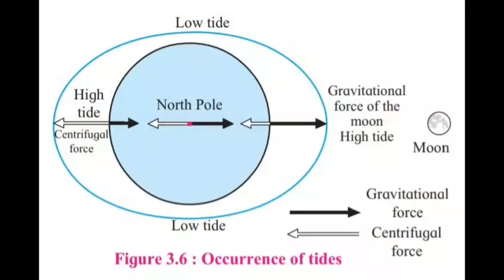Tides: The following factors are responsible for the occurrence of tides. First, the gravitational pull of the moon and the sun as well as that of the earth. Second, revolution of the earth around the sun and the indirect revolution of the moon around the sun. Third, centrifugal force generated due to the rotation of the earth. The moon is closer to the earth than the sun, hence its gravitational force becomes more effective than that of the sun. Tides occur due to the relative position of the moon, the sun and the earth. A place on the earth located at the opposite point of the place experiencing high or low tide also experiences high or low tide respectively at the same time. This is a result of the centrifugal force.